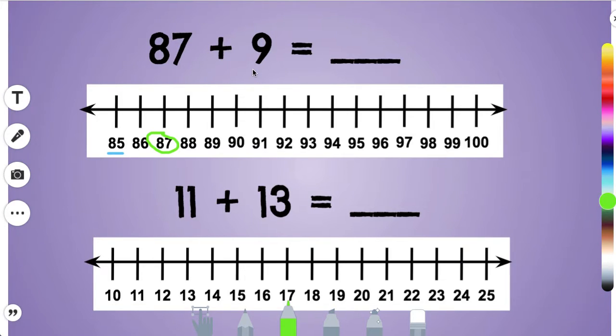Now because I'm adding 9, I'm going to start by going up with hops of 1 to solve this. I'll go 1, 2, 3, 4, 5, 6, 7, 8, 9 and I landed on 96. So 87 plus 9 equals 96.